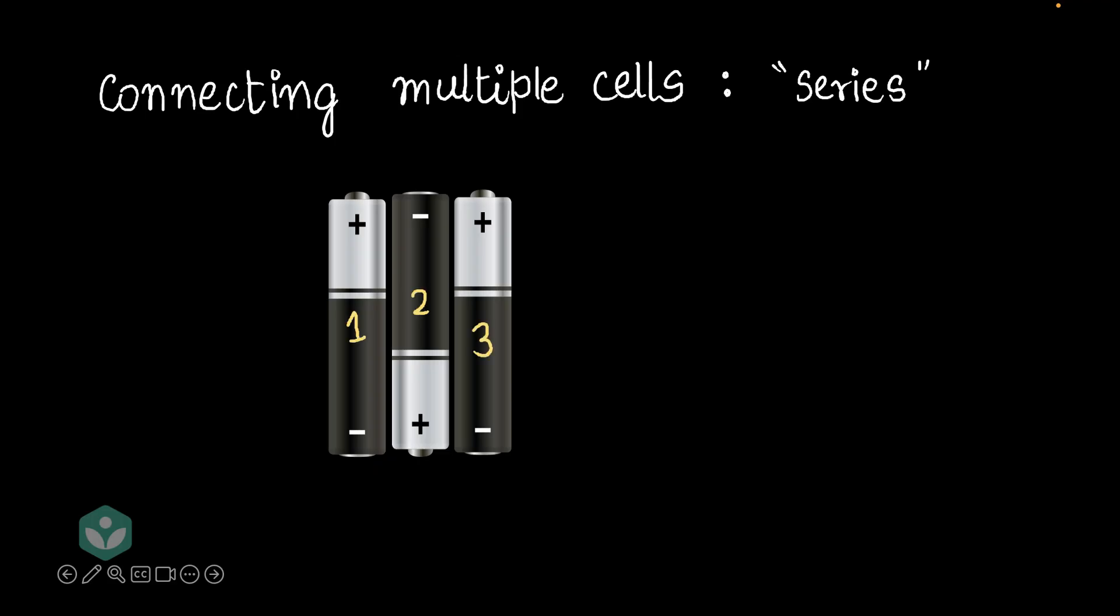And what we're going to do is we're going to connect the positive end of the first battery, positive terminal of the first battery to the negative terminal of the second battery. Remember, that's what we did in the previous case. And what we do next is connect the positive terminal of the second battery to the negative terminal of the third battery.